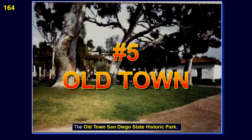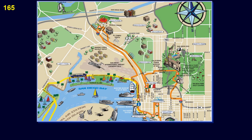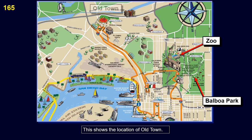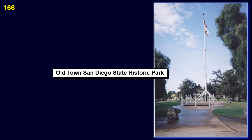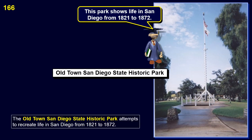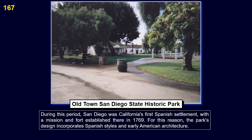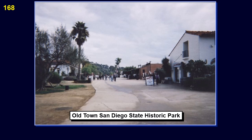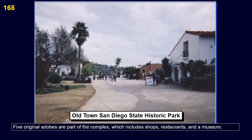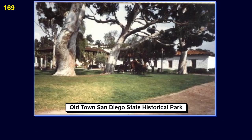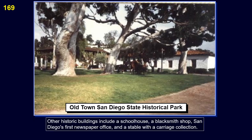Number 5: The Old Town San Diego State Historic Park. This shows the location of Old Town. San Diego was California's first Spanish settlement, with a mission and fort established there in 1769. For this reason, the park's design incorporates Spanish styles and early American architecture. Five original adobes are part of the complex, which includes shops, restaurants, and a museum. The historic buildings include a schoolhouse, a blacksmith shop, San Diego's first newspaper office, and a stable with a carriage collection.